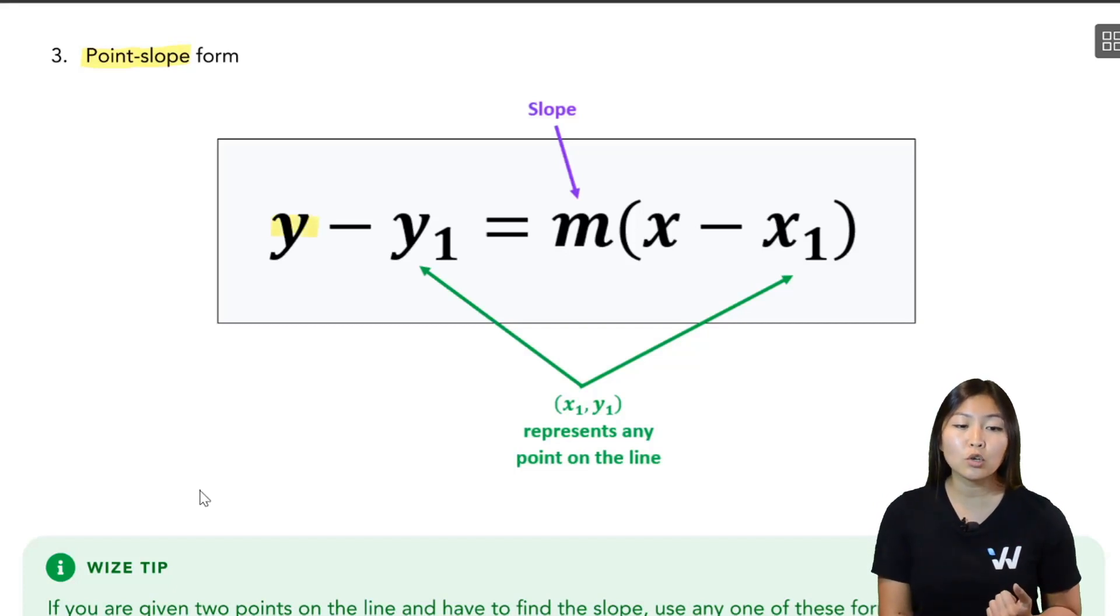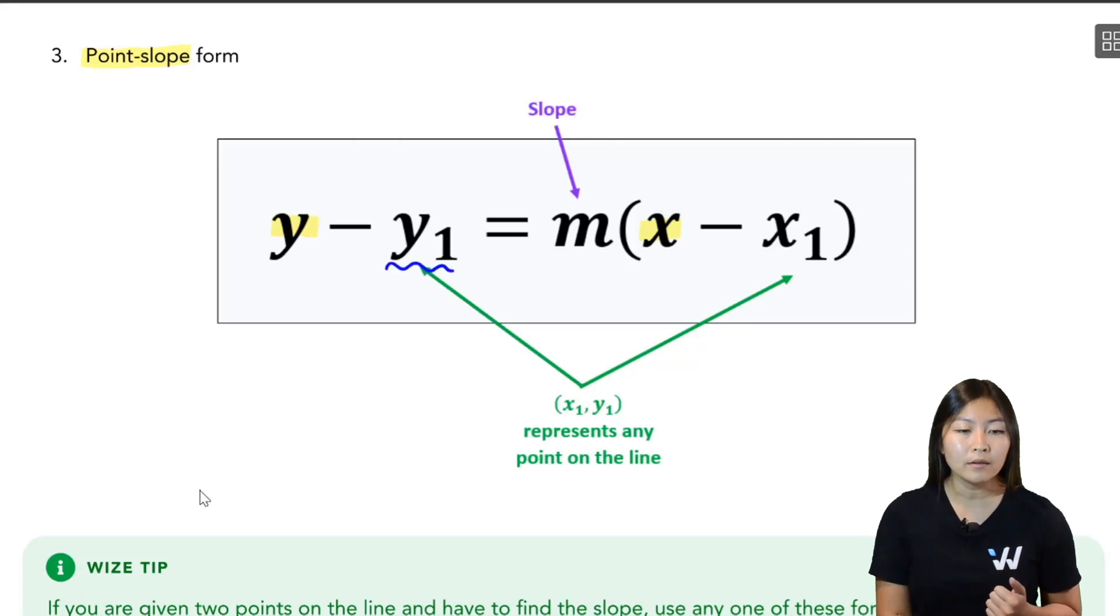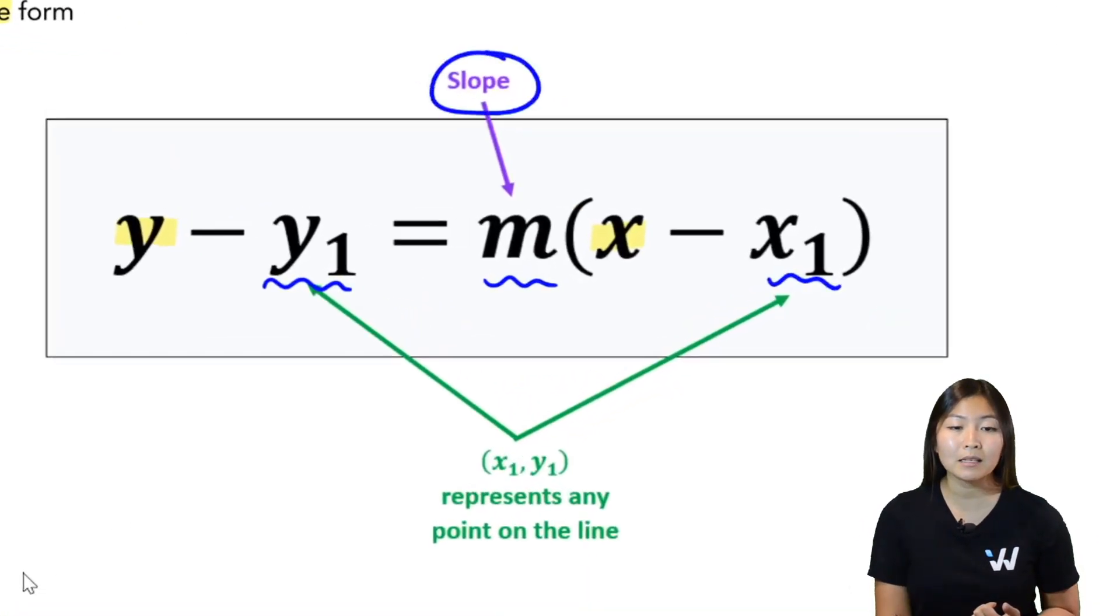In this equation, y and x are the variables, they stay as letters, whereas y1, m, and x1, these are numbers. Just like with your slope y-intercept form, m is the slope, it tells you how steep the line is, and x1, y1 as a pair represents any point on the line.